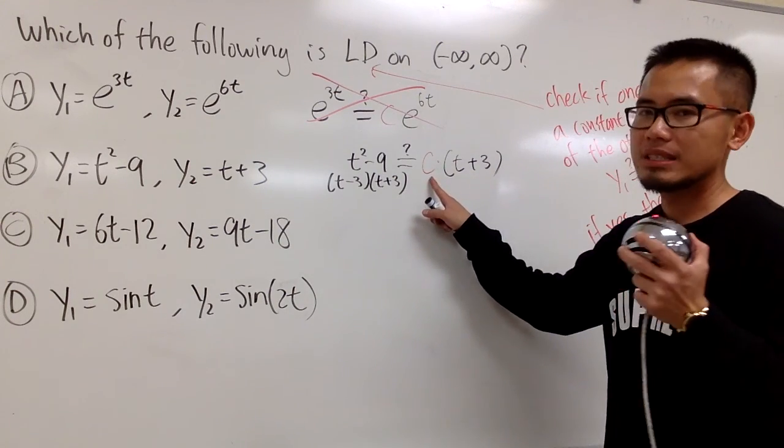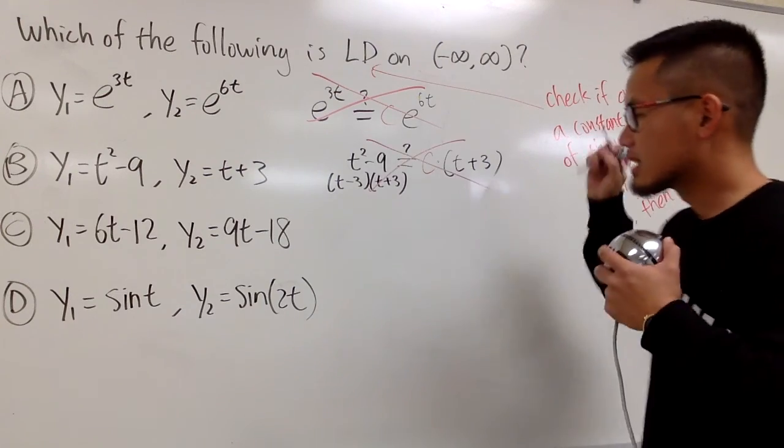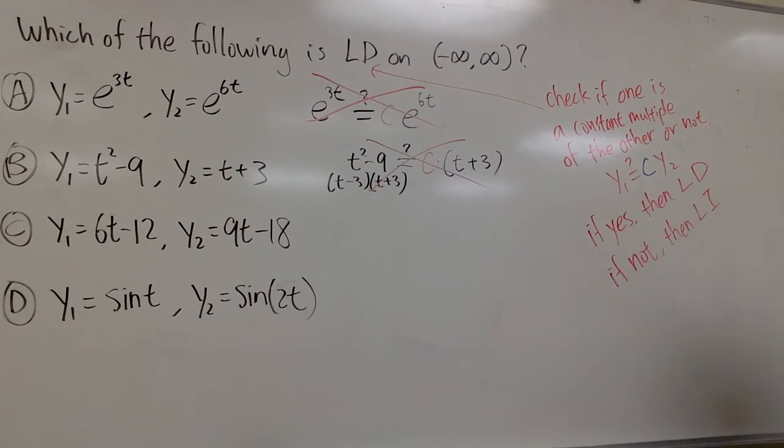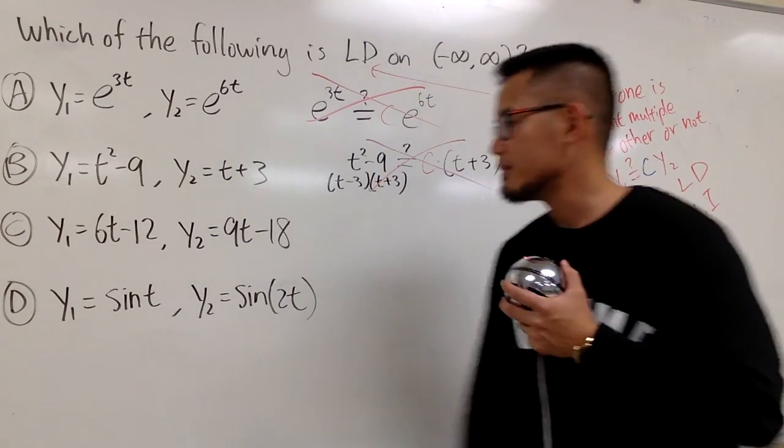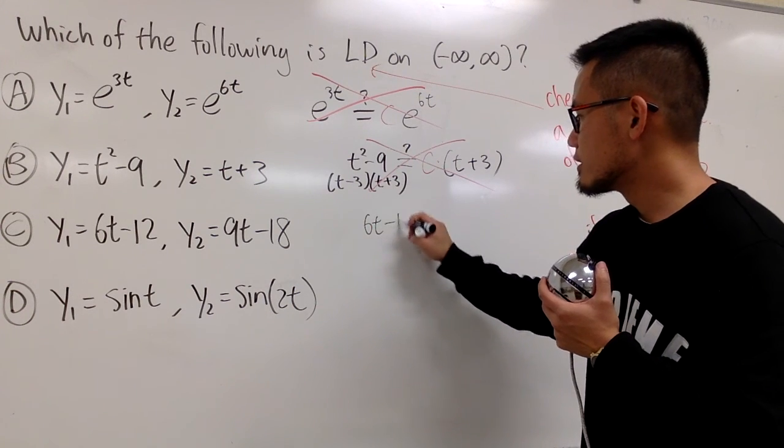because you cannot find c value to make this true. So, because they are not constant multiple of each other, once again, they are linearly independent. Next one.